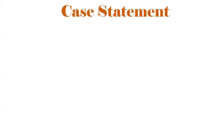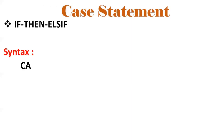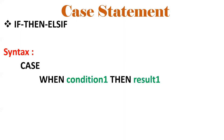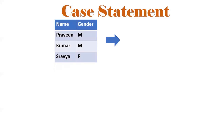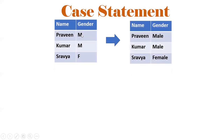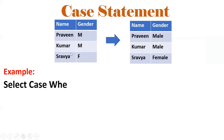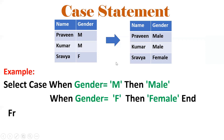Now, the CASE statement — it is like IF-THEN-ELSE. The syntax: CASE WHEN condition1 THEN result1 WHEN condition2 THEN result2 ELSE result END. When condition 1 is true, result 1 is displayed; when condition 2 is true, result 2 is displayed; otherwise the ELSE result. For example: CASE WHEN gender = 'M' THEN 'Male' WHEN gender = 'F' THEN 'Female' END FROM temp_table. When a value in the database needs to be displayed differently, we use CASE statement.